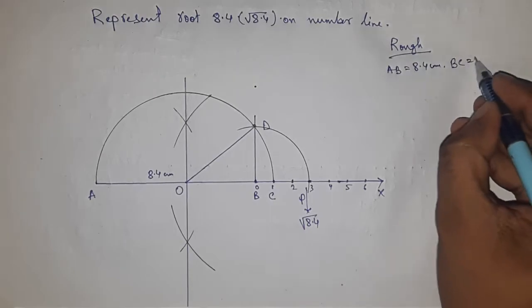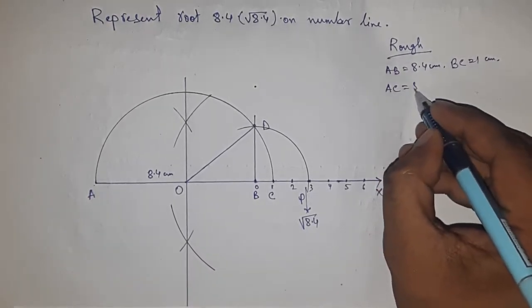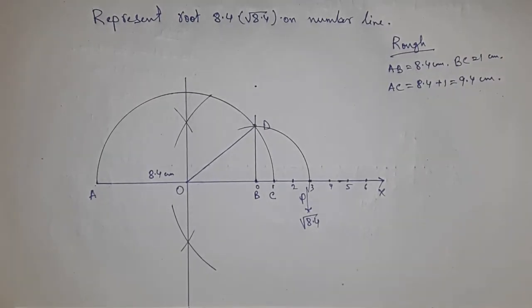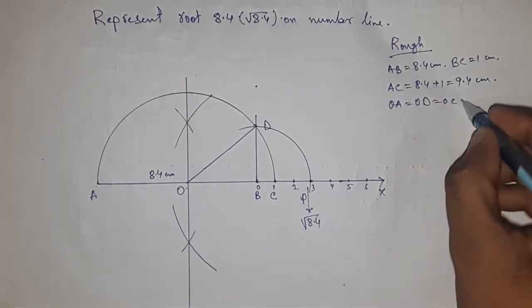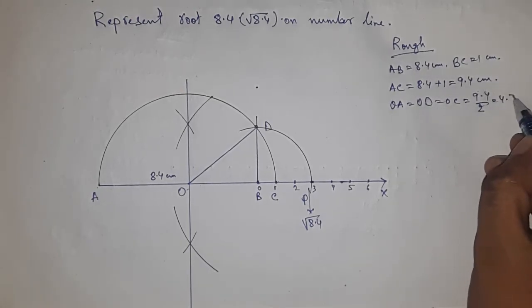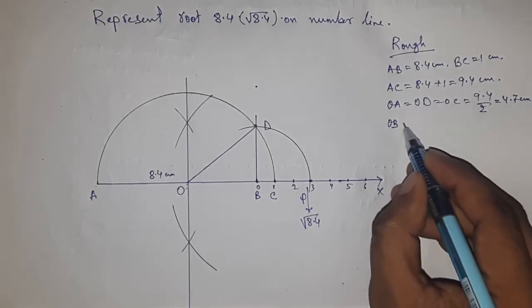Given AB equals 8.4 centimeters, BC equals 1 centimeter, we can write AC equals 8.4 plus 1, so this is 9.4 centimeters. So OA equals OC equals OD equals 9.4 by 2, which equals 4.7 centimeters.